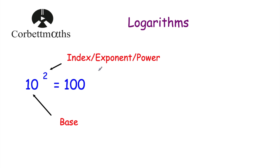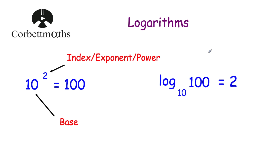It can be quite useful to write this in a different form by introducing logarithms. We could write it as log to base 10 of 100 is equal to 2. The base is 10, so we write log to base 10 of 100 — that's the answer — and that equals whatever the power would be. What power would you raise 10 by to get to 100? That would be 2, so log to base 10 of 100 is equal to 2.